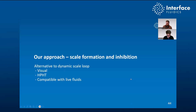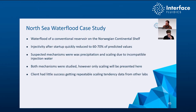The second case study looks at scale formation and inhibition in a water flood — an alternative to a dynamic scale loop that is visual, high pressure, high temperature, and compatible with live fluids. A North Sea producer approached Interface about a water flood they were conducting in a conventional NCS reservoir. Injectivity after startup quickly reduced to 60 to 70% of their predicted values. The suspected mechanisms were twofold, one being wax precipitation.